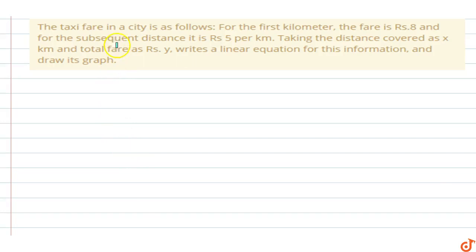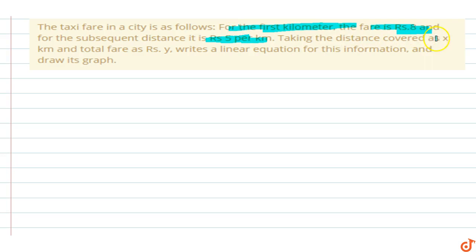In this question, the taxi fare in the city is as follows: for the first kilometer the fare is rupees 8, and for the subsequent distance it is rupees 5 per kilometer. Taking the distance covered as x kilometers and the total fare as rupees y, write a linear equation for this information and draw its graph.